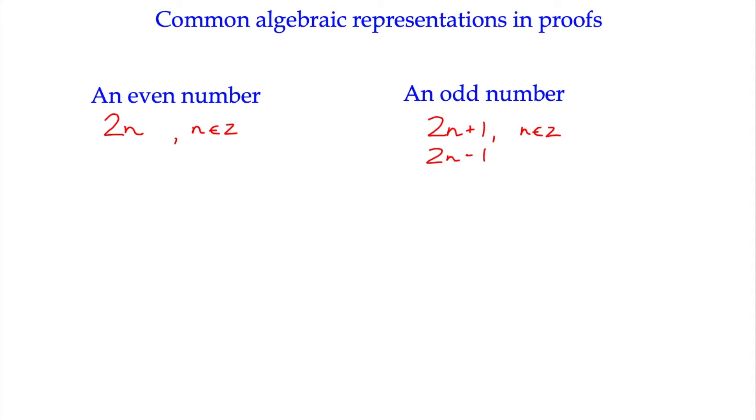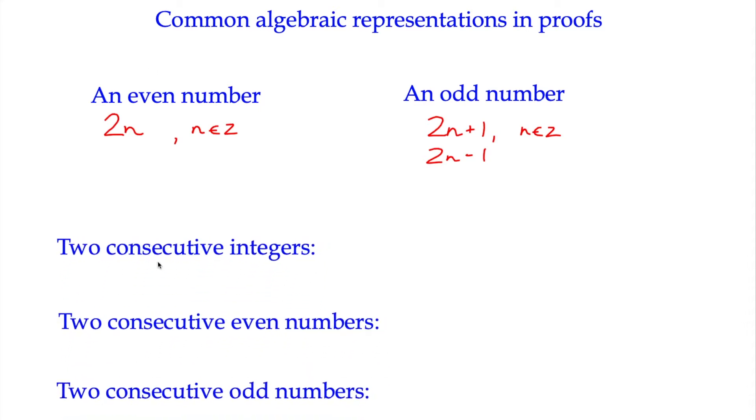We can develop that a little bit with the idea of consecutive integers, consecutive even or odd numbers, using the same idea. So we could write two consecutive integers. Well, it depends, because that means two numbers that are next to each other, like 3 and 4 are consecutive, 8 and 9 are consecutive. But interestingly, if we're using the language of odd and even, we could say n and n plus 1 are consecutive integers.